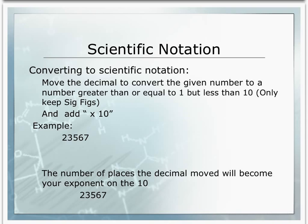In our example, 23,567 — to convert this into a number greater than or equal to 1 but less than 10, we need to move our decimal point. Our decimal point is originally to the right of the 7. If we move it between the 2 and the 3, we do have a number greater than or equal to 1 but less than 10.